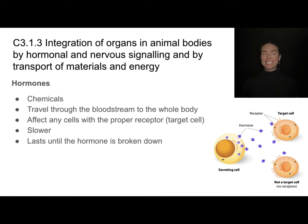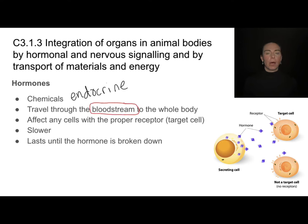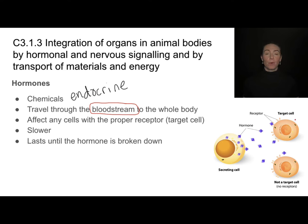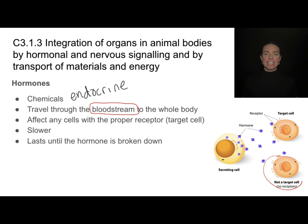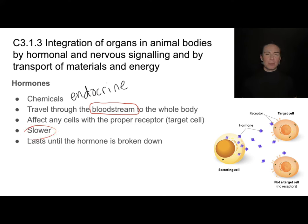One way that organs, tissues, or organ systems can communicate with one another is through hormones. Hormones are chemicals produced by endocrine glands, and they travel through the bloodstream to the whole body. But they only affect certain cells — those that have a receptor to fit that hormone, called target cells. Hormonal communication lasts a long time, but because hormones travel through the blood, they are quite a bit slower than nervous system signaling.